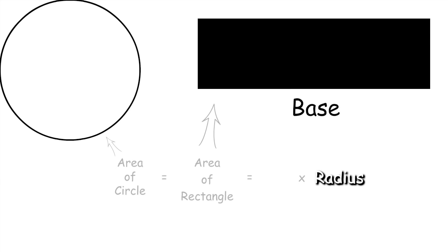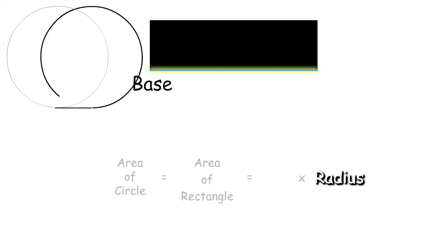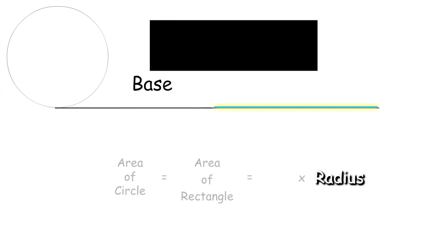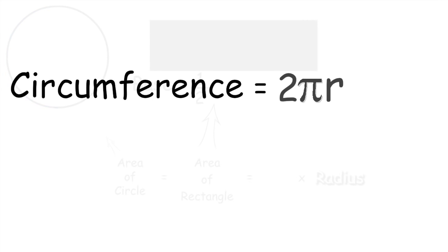To find the base, we need to look at the circumference of the circle. And when we compare the base and the circumference, we can see that the base is equal to one half the circumference. Remember that the circumference is equal to 2 pi r.